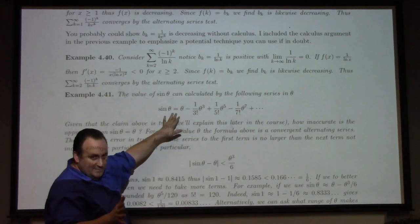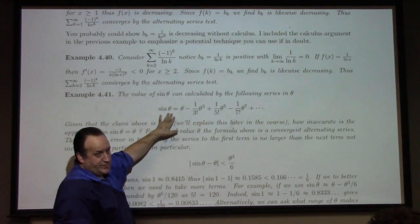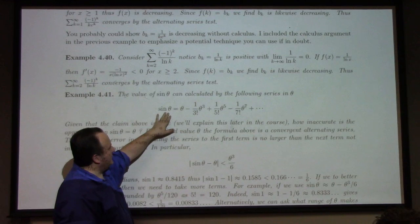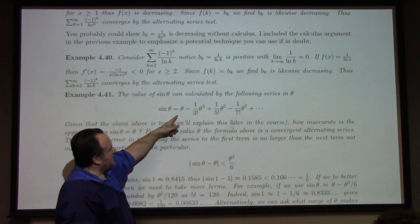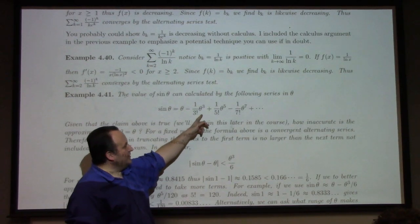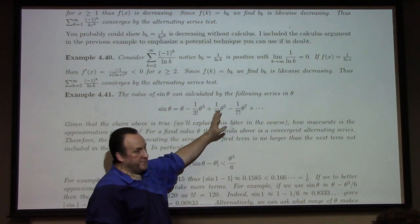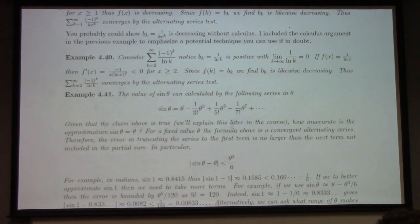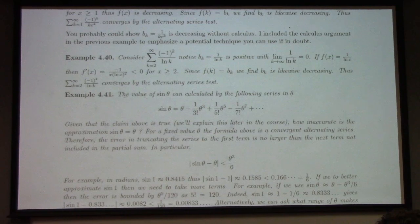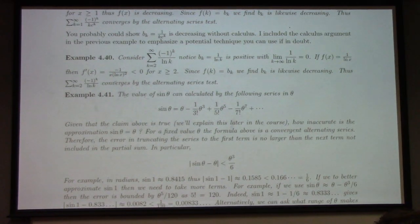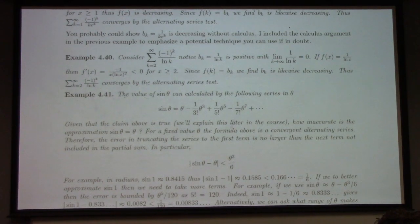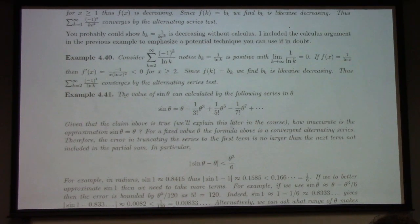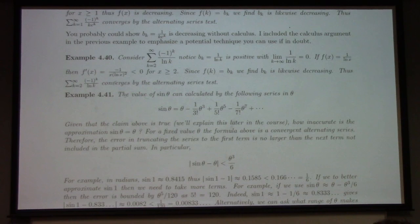So here it turns out, again, this is one of those it turns out, when we study Taylor's series, we will find that there's a series that's given for sine theta, namely this. Theta minus one over three factorial theta cubed plus one over five factorial theta to the fifth and so forth. What is this? This is an alternating series. Plus, minus, plus, minus. If theta's positive, it just goes plus, minus, plus, minus. If theta's negative, it goes minus, plus, minus, plus, minus, plus. So whether theta's positive or negative, it's an alternating series.